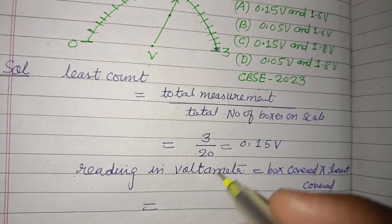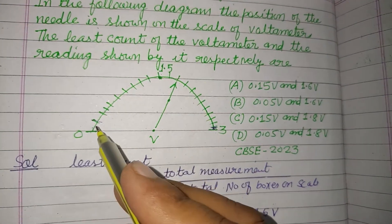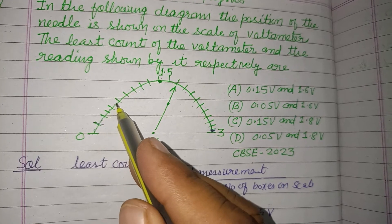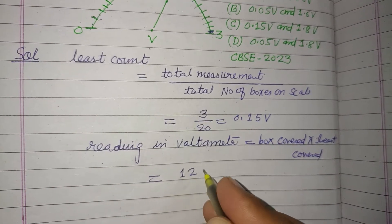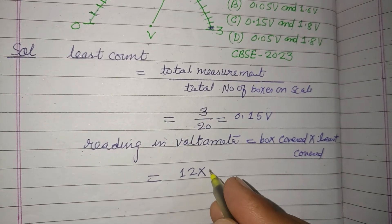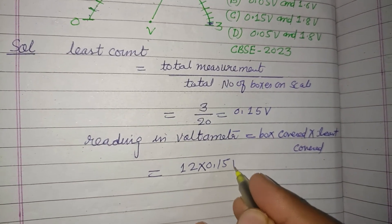How many boxes are covered by the voltmeter now? These are 1, 2, 3, 4, 5, 6, 7, 8, 9, 10, 11, 12. So 12 boxes are covered, and least count is 0.15 volt.